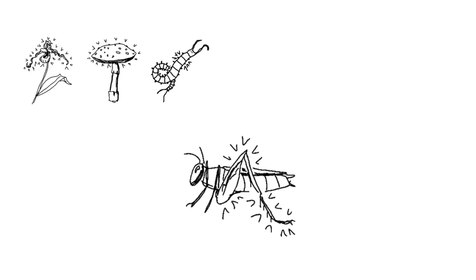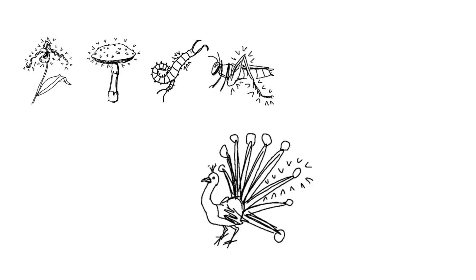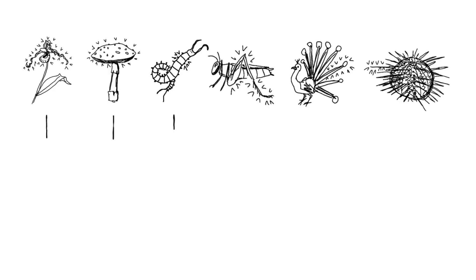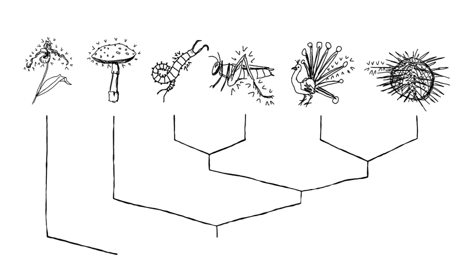If you look at several organisms and list the unique features of those organisms, you are actually looking at the unique events in their histories that tell you something about their relationships. This is because these events can be shared with other organisms. If they are shared, their histories are shared. In other words, the species are related.